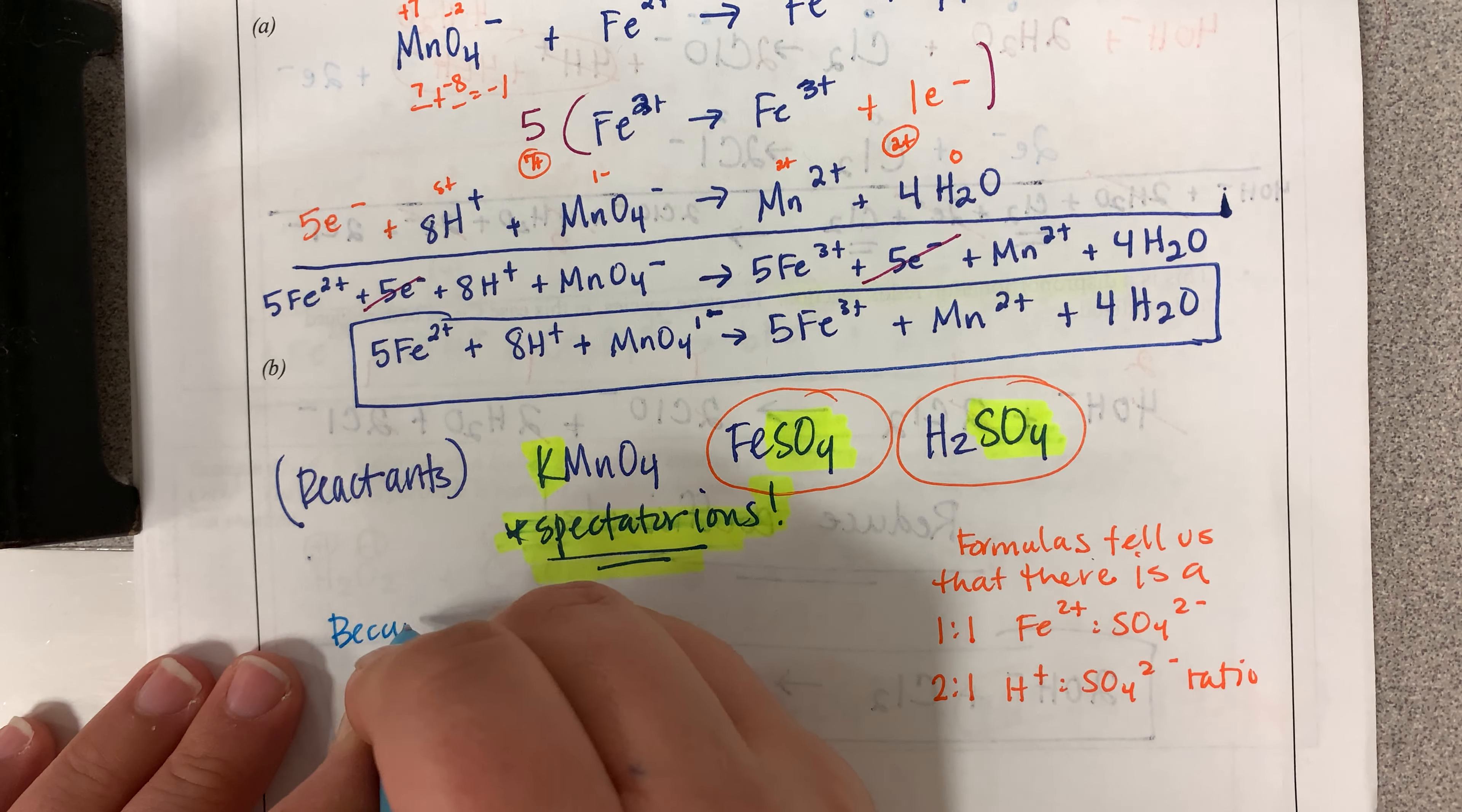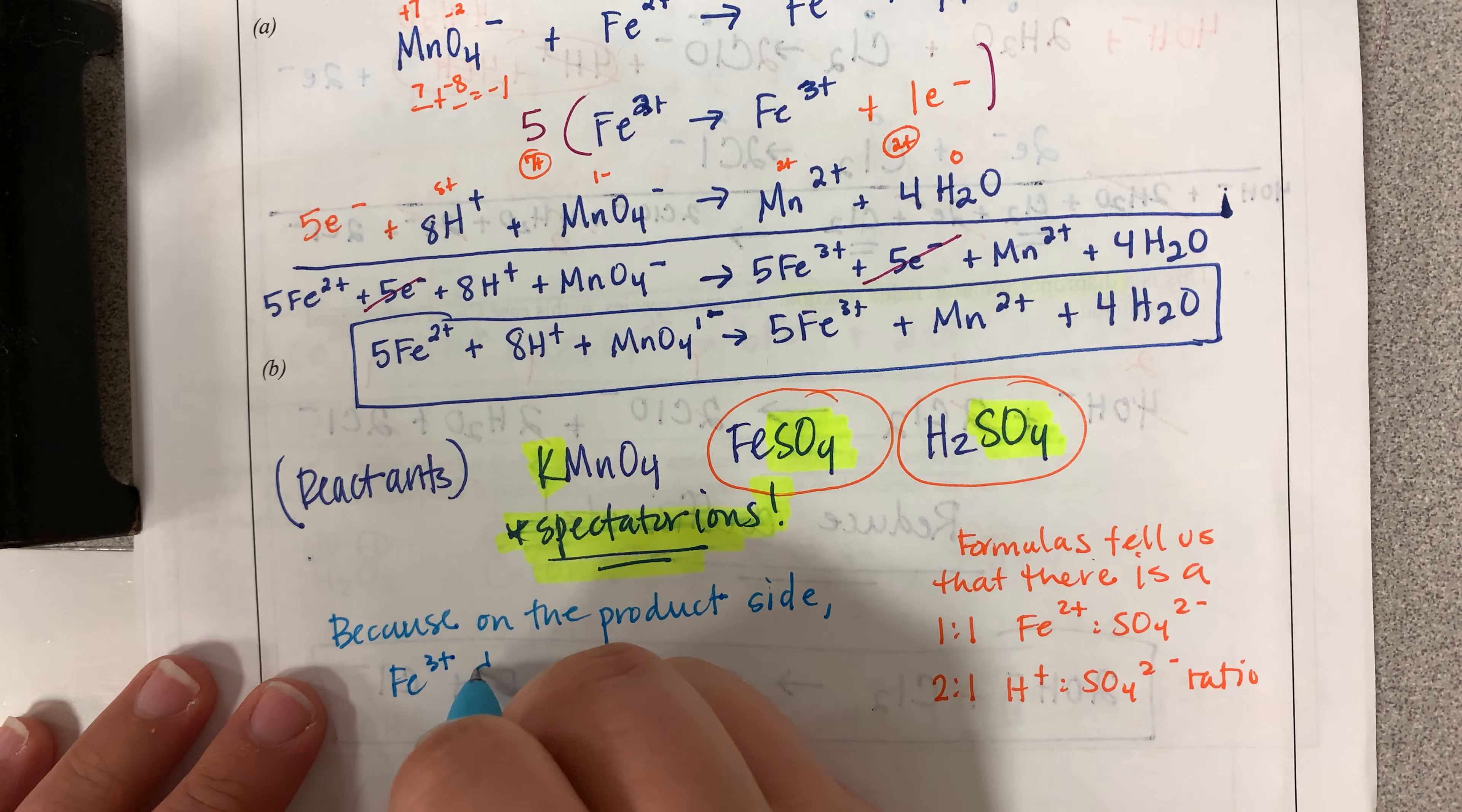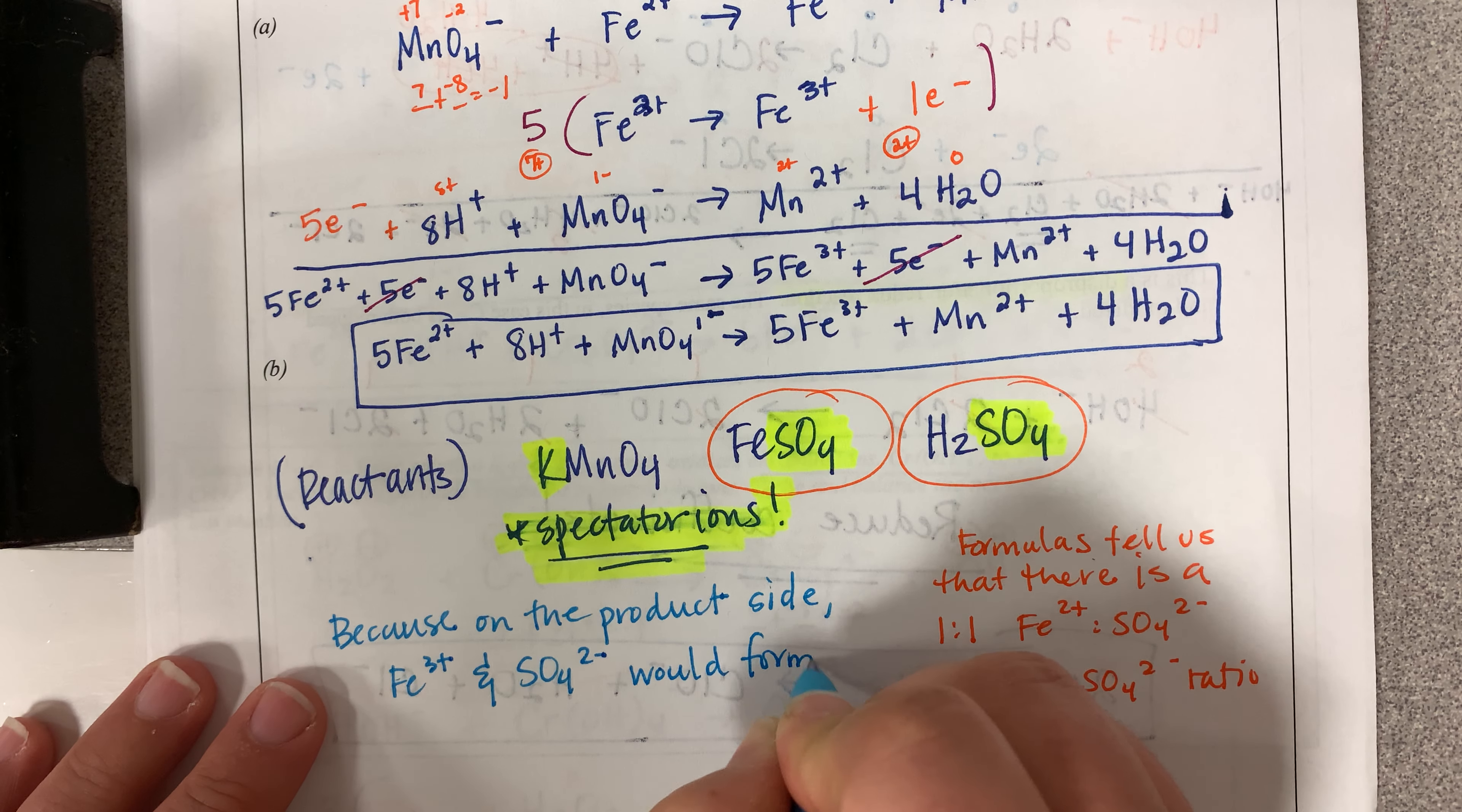Because on the product side, Fe3+ and SO4 2- would form, if we were to put this together, Fe2(SO4)3,